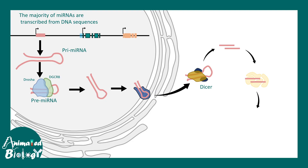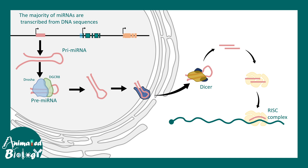At this point, the mature microRNA binds to an mRNA of interest. This particular mRNA has a complementary sequence for the microRNA. Many of the microRNA binding sites are present in the 5' untranslated region or the 3' untranslated region. They ultimately bind to the mRNA to form a RISC complex, or RNA-induced silencing complex.